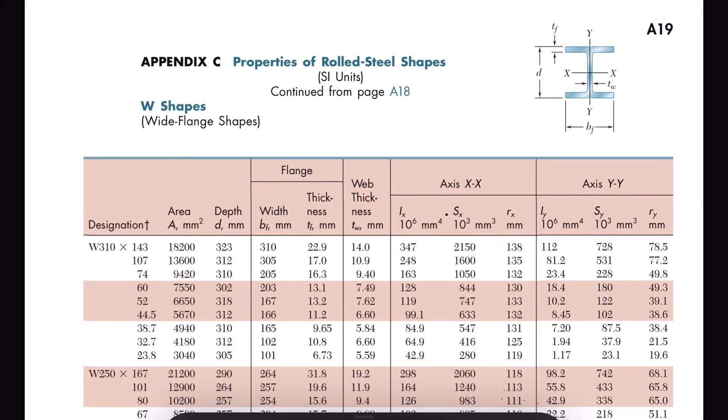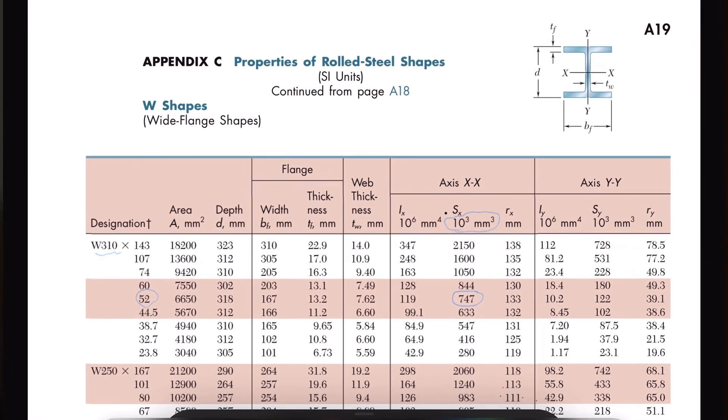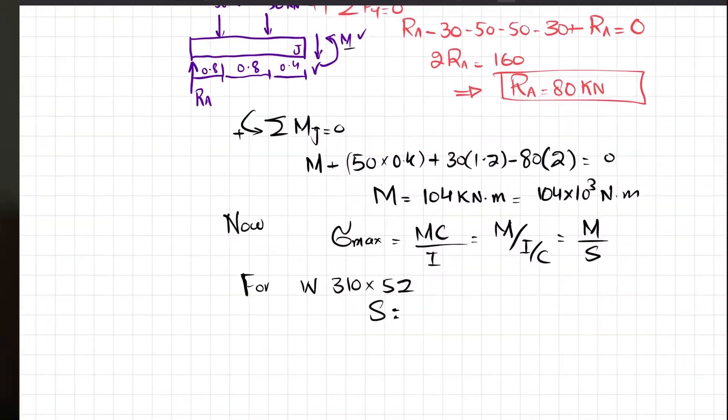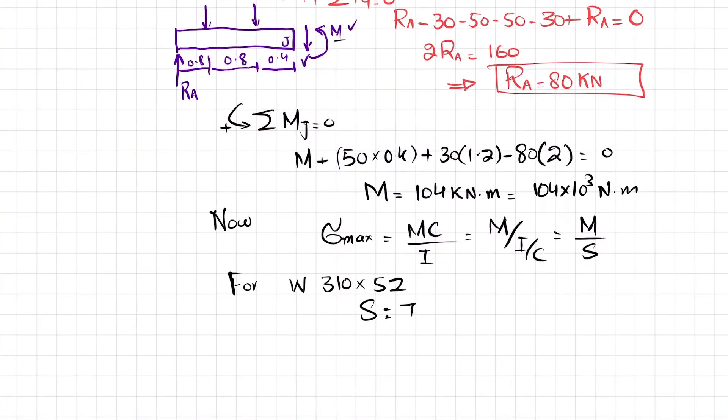Here you can see that this is W310 by 52, and section modulus is 747 × 10³ cubic millimeters. So write down this value: 747 × 10³ cubic millimeters, and in terms of meters, that will be equal to 747 × 10⁻⁶ cubic meters.